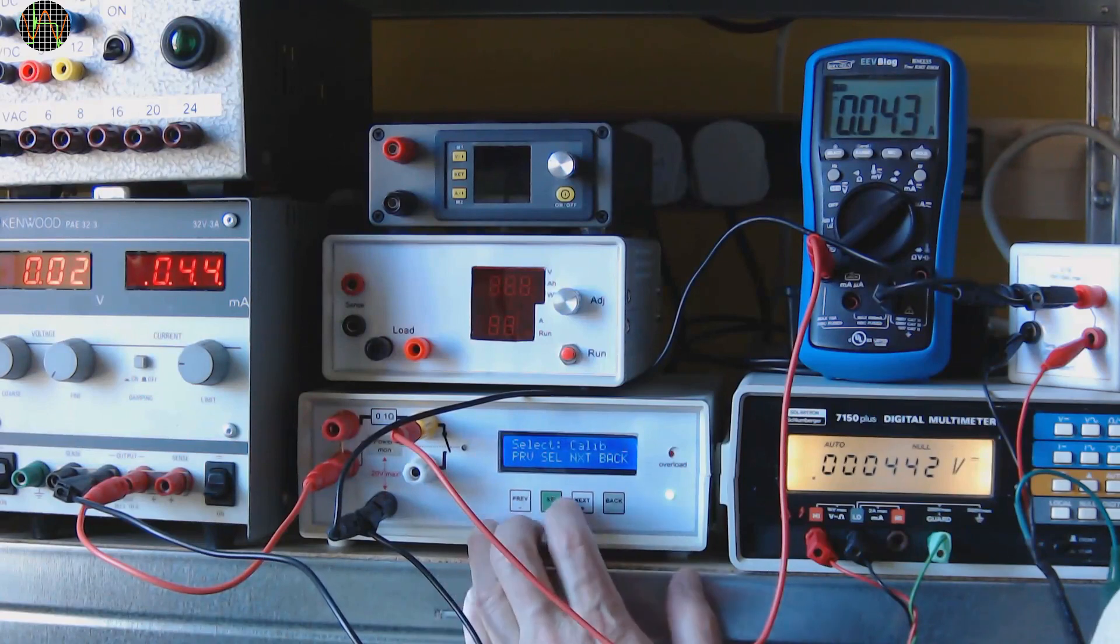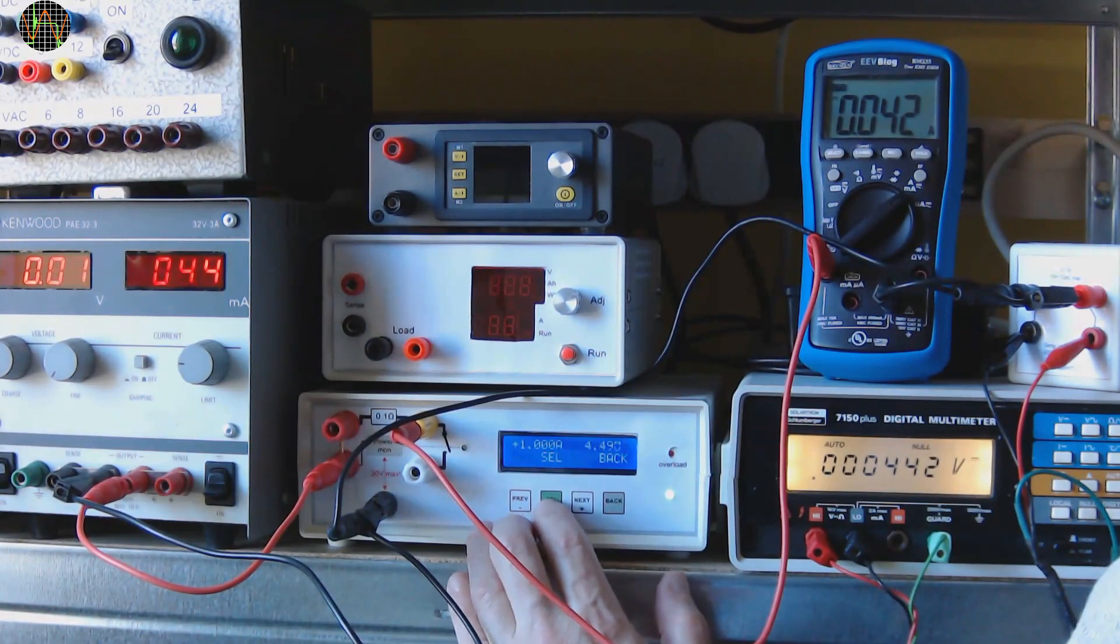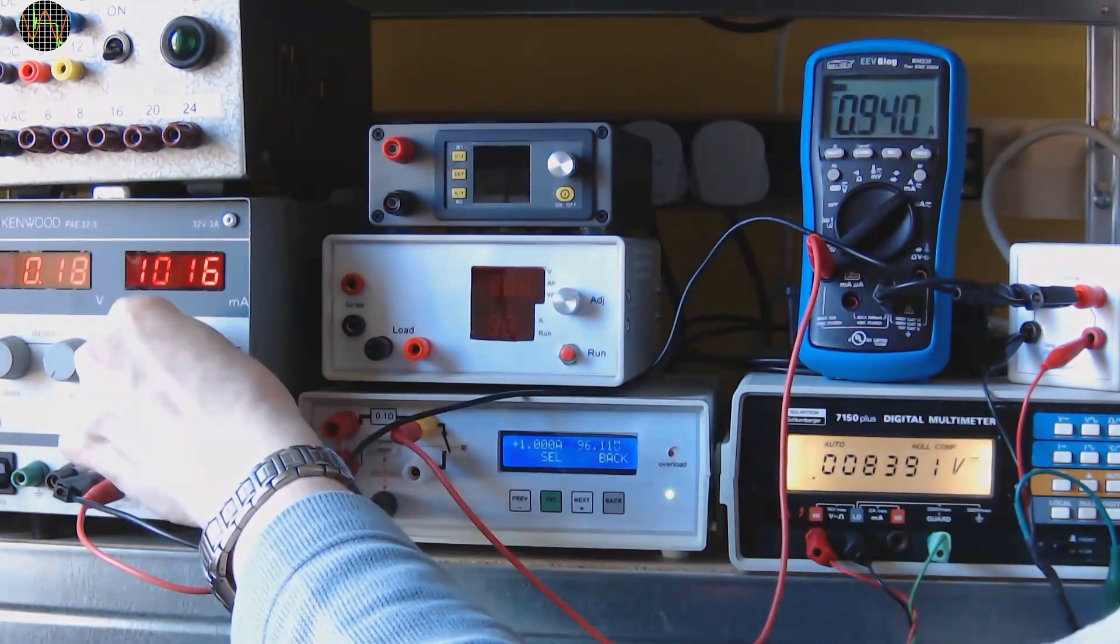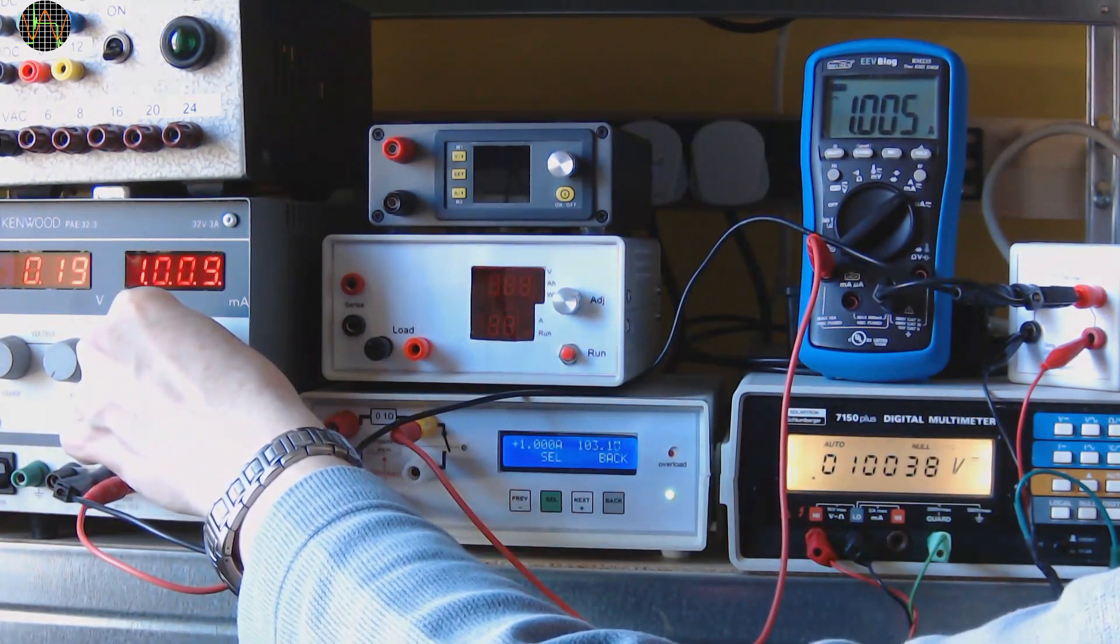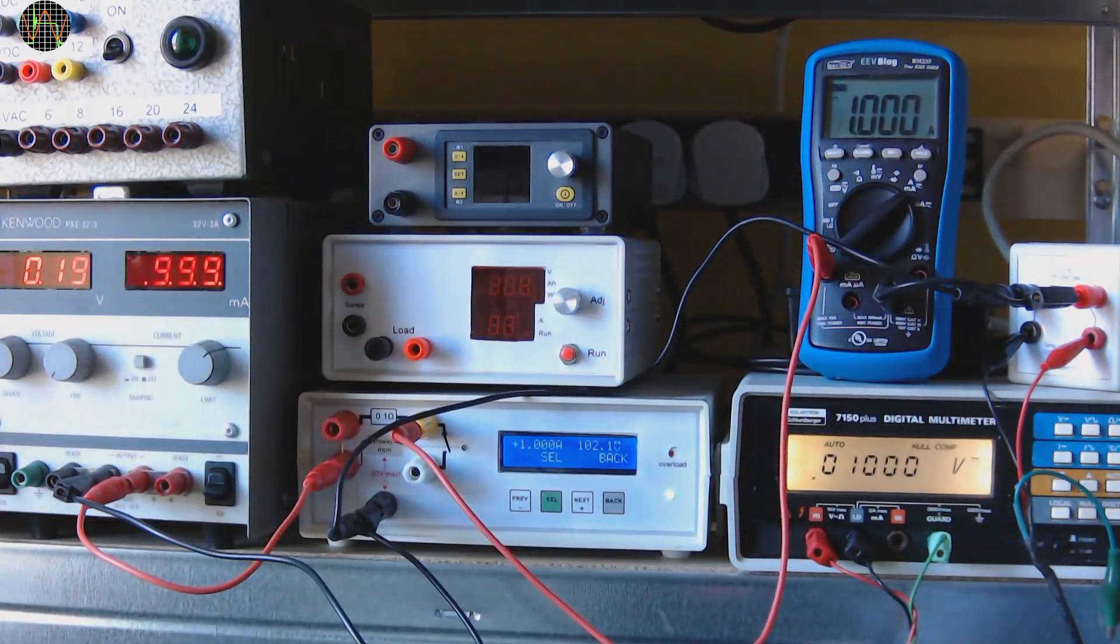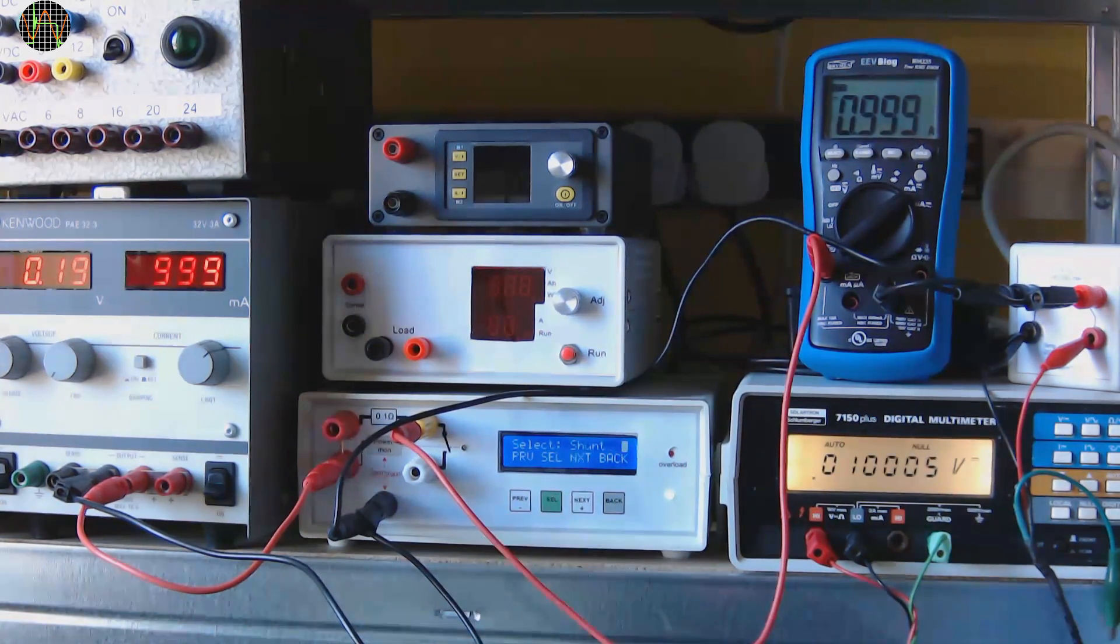Selecting the calibration menu and going to the shunt entry shows the target of 1A. I use the power supply to adjust it as close as possible to 1A which means 10mV on a solatron display which corresponds nicely to the control on the BM235. Pressing select finishes the calibration.